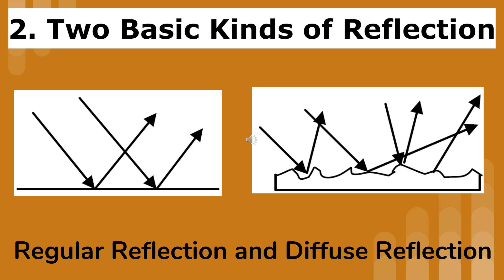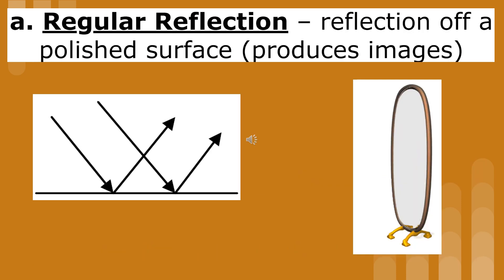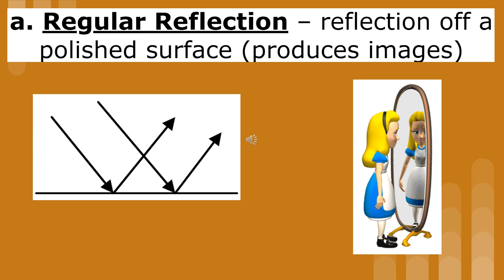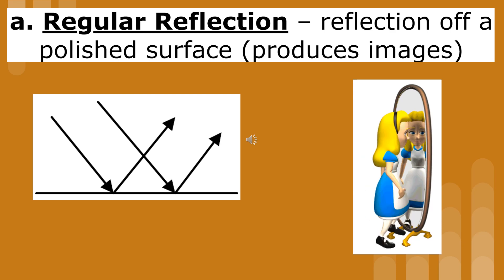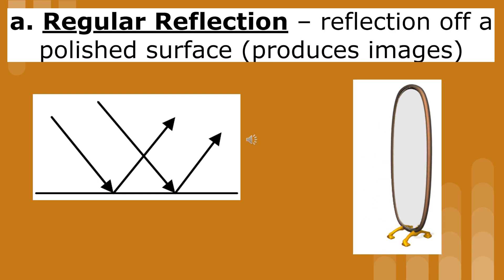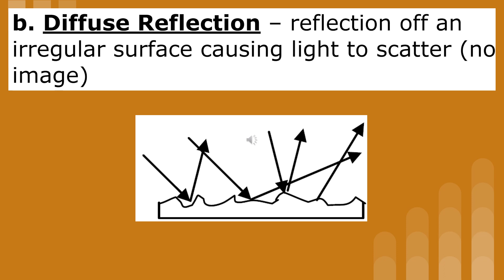There are two basic kinds of reflection. Regular reflection, which produces an image, and diffuse reflection, which does not. Regular reflection is a reflection off a polished surface. When light reflects off a bumpy or irregular surface, you cannot see an image.